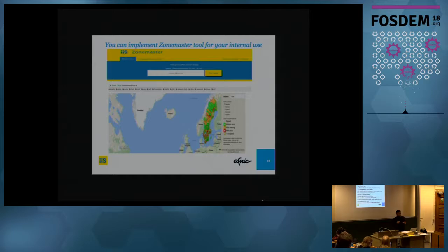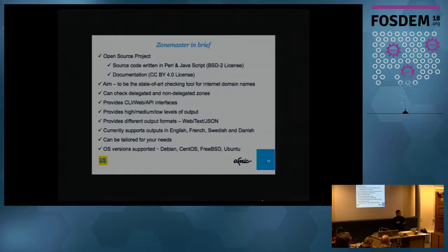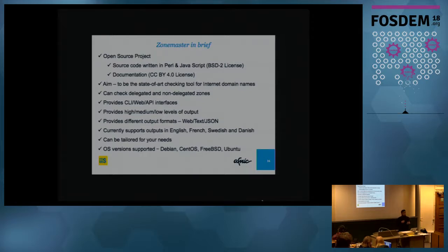ZoneMaster is an open-source project. All the code is under the BSD-2 license and has been extensively documented — that is one of the main differences between ZoneMaster and other tools. All documentation is licensed under Creative Commons. The objective of both the Swedish Registry and the French Registry was to create ZoneMaster as a tool that should be used by everybody to test DNS zone validity. You can use it for both delegated and non-delegated zones — zones not yet in the DNS.